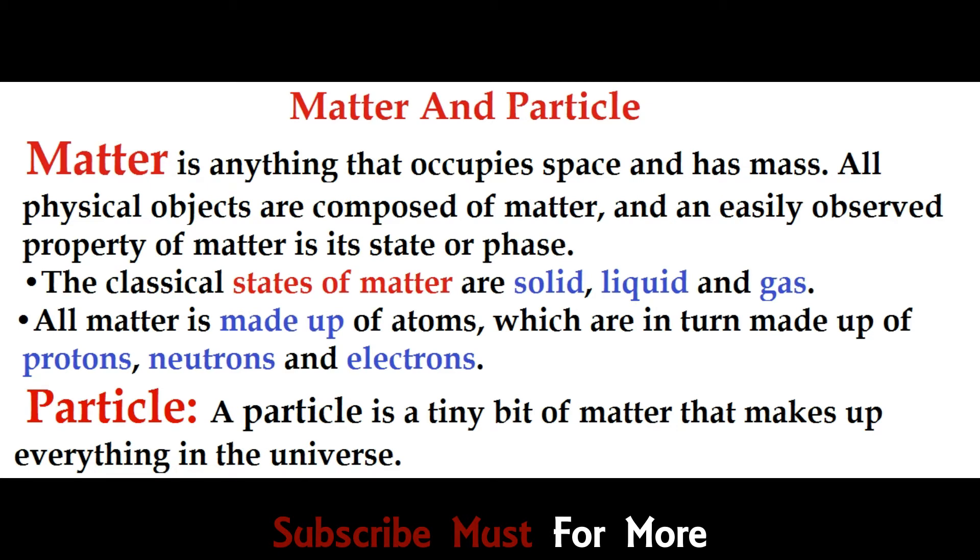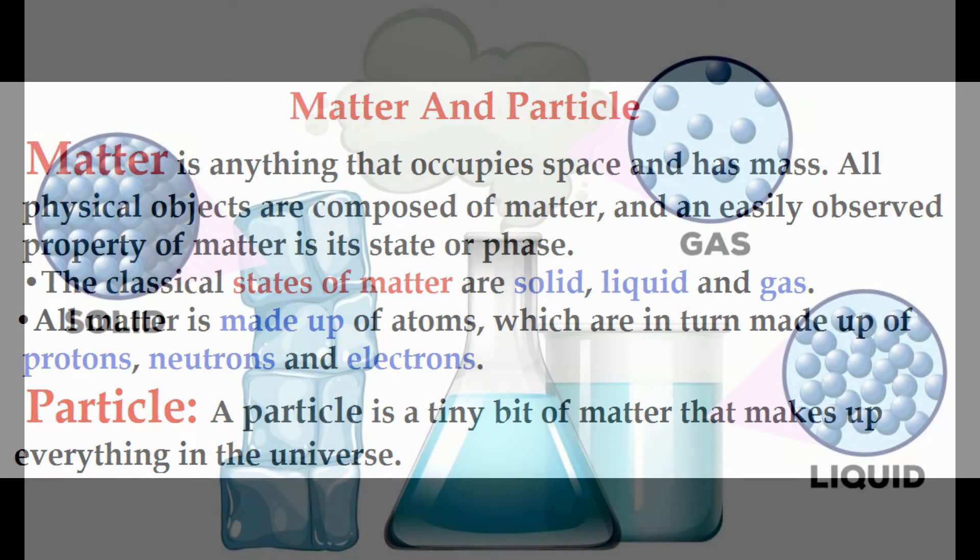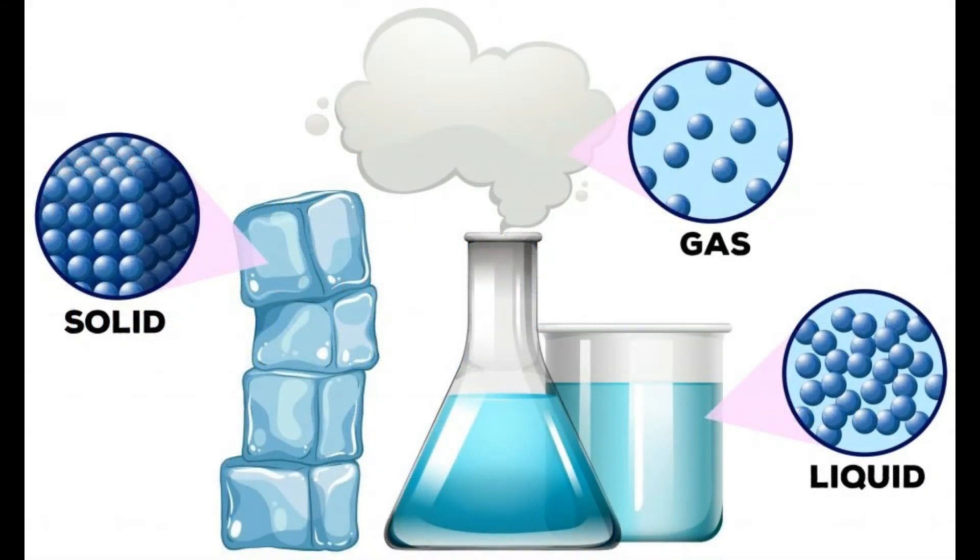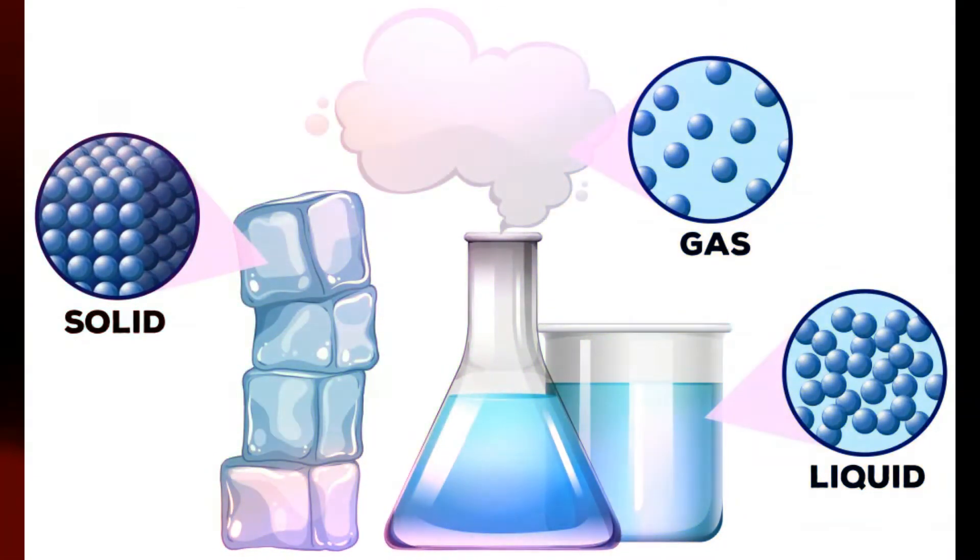The three main forms of matter are gas, solid, and liquid. These are called three states of matter. Water can be a solid, liquid, or gas. Solid water is ice, liquid water is water you drink, and water as a gas is steam.